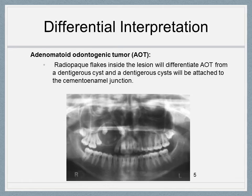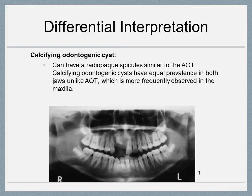Adenomatoid odontogenic tumor is a rare radiolucency involved with an impacted tooth or teeth. Radiopaque flakes inside the lesion will differentiate AOT from a dentigerous cyst. Likewise, attachment of the cyst to the cementoenamel junction will suggest a dentigerous cyst. Calcifying odontogenic cysts are a differential for AOT due to their slow-growing benign form. Like an AOT, the calcifying odontogenic cyst can also have a radiopaque spicule.